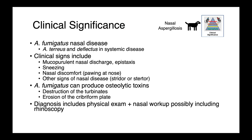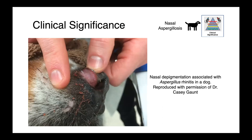Diagnosis of nasal aspergillosis includes a thorough physical exam plus a nasal workup, possibly including rhinoscopy and even a CT. On physical exam, one of the things you're going to be looking for with dogs suspected to have nasal aspergillosis is depigmentation.